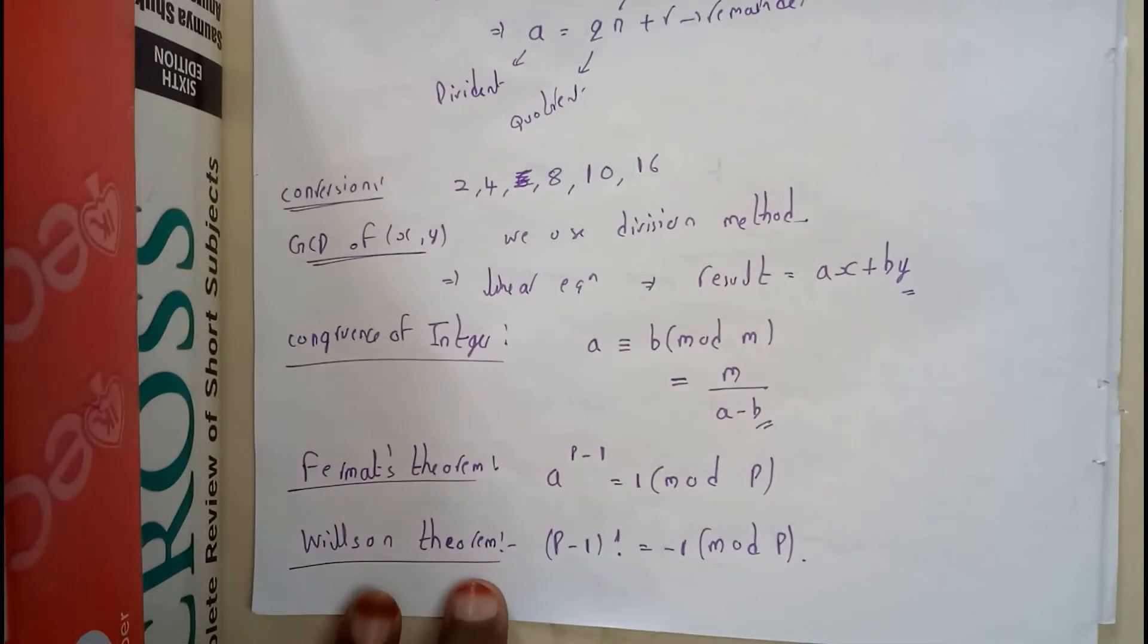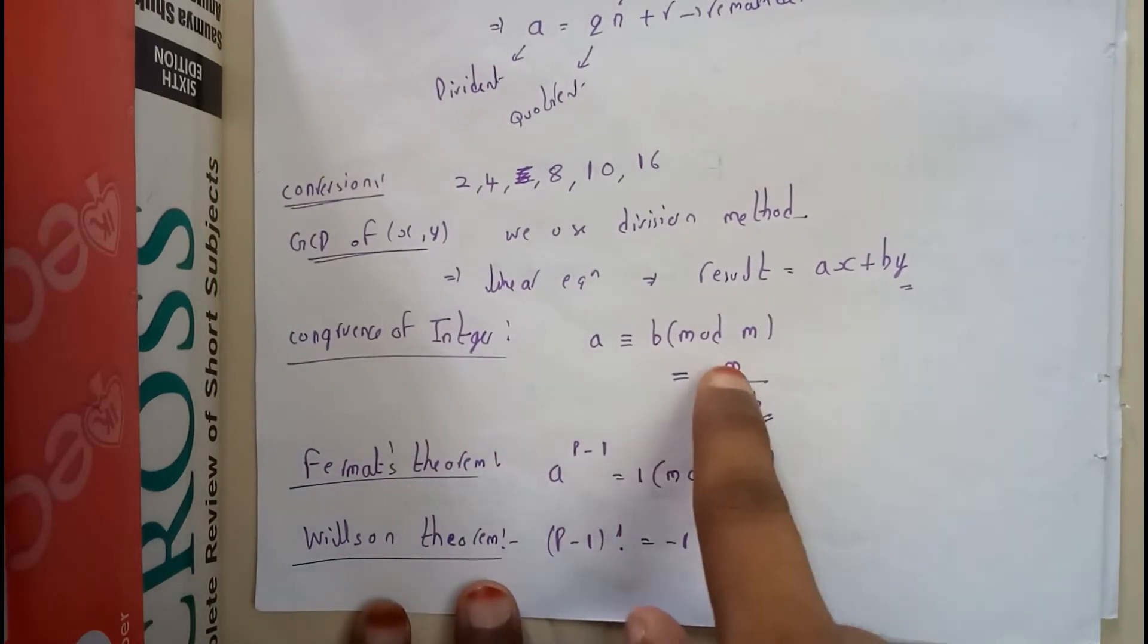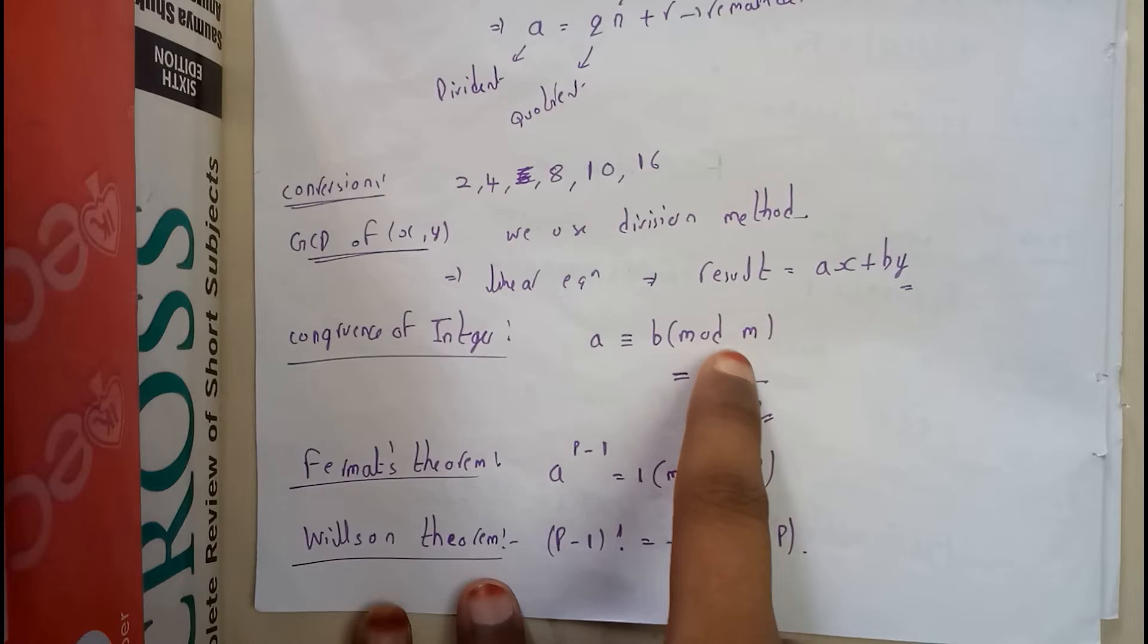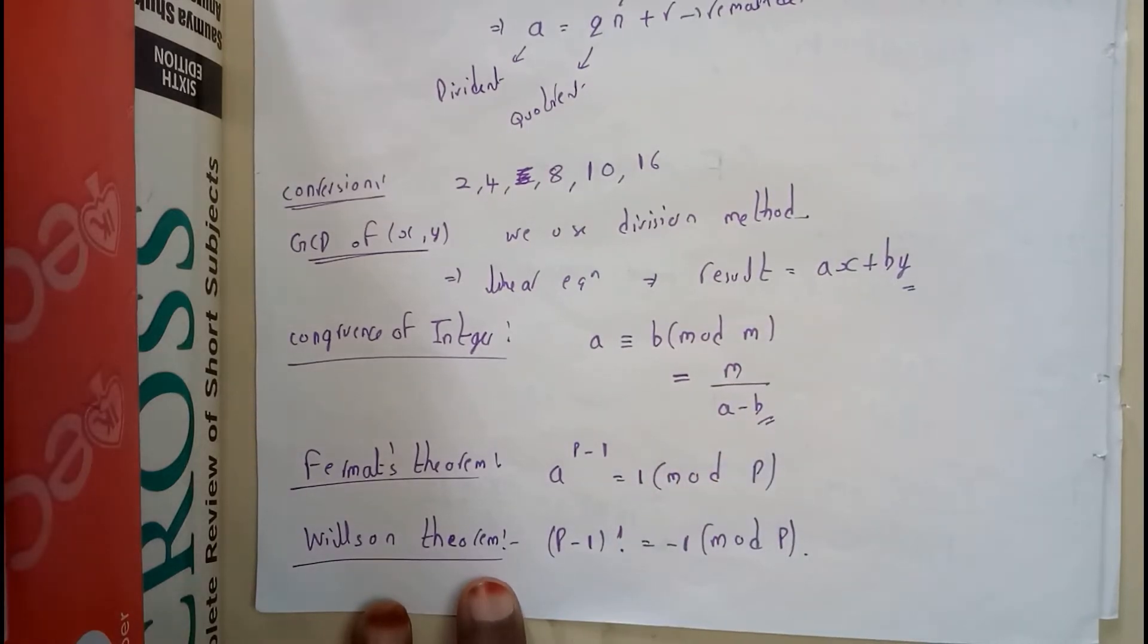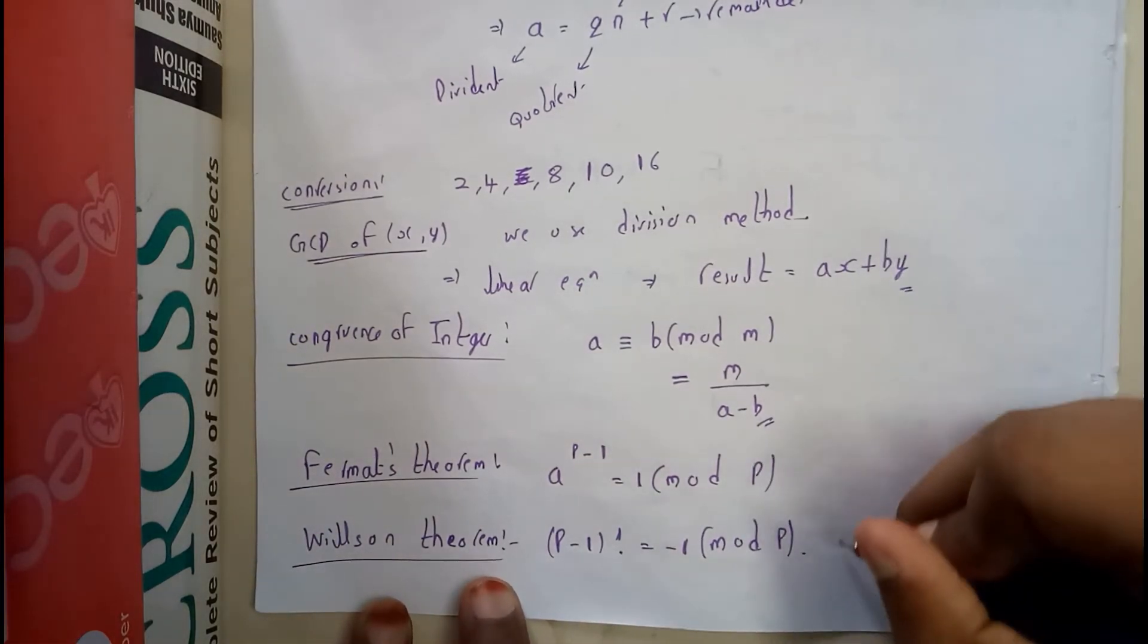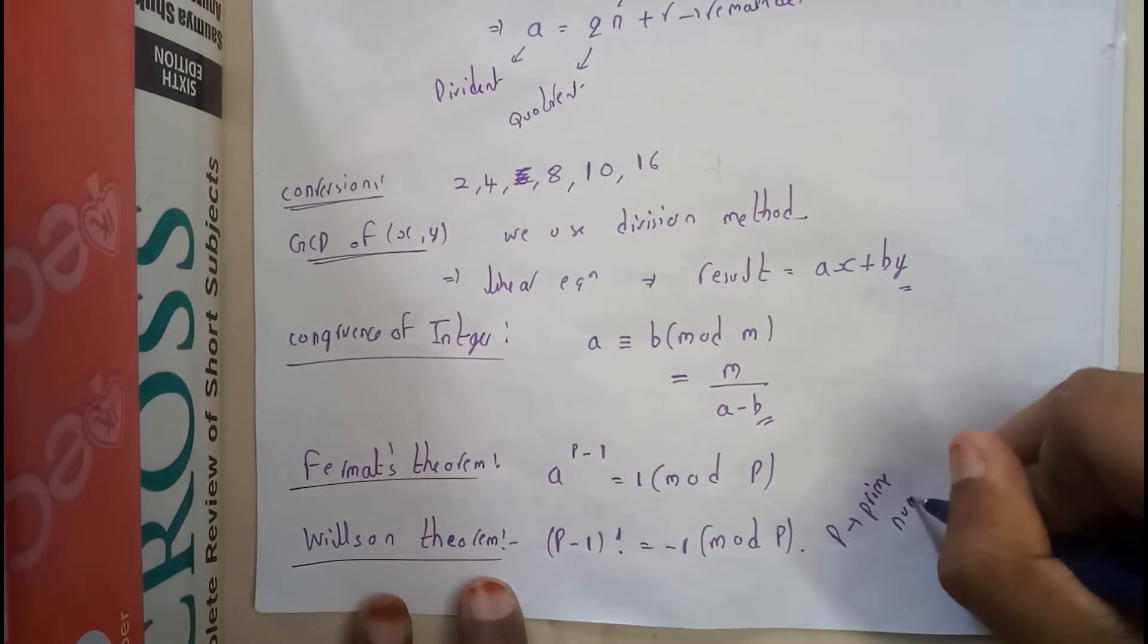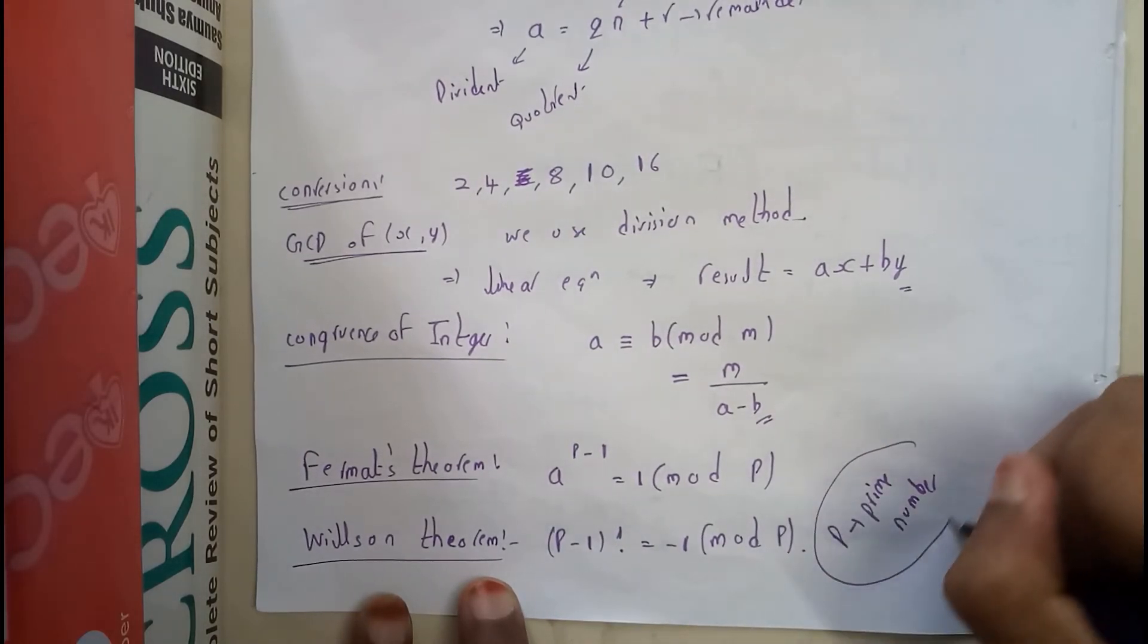We also went through congruency of integers: a ≡ b (mod m), from which we can write m divides (a - b). Fermat's theorem is a^(p-1) ≡ 1 (mod p), and Wilson's theorem is (p-1)! ≡ -1 (mod p), where p is a prime number.